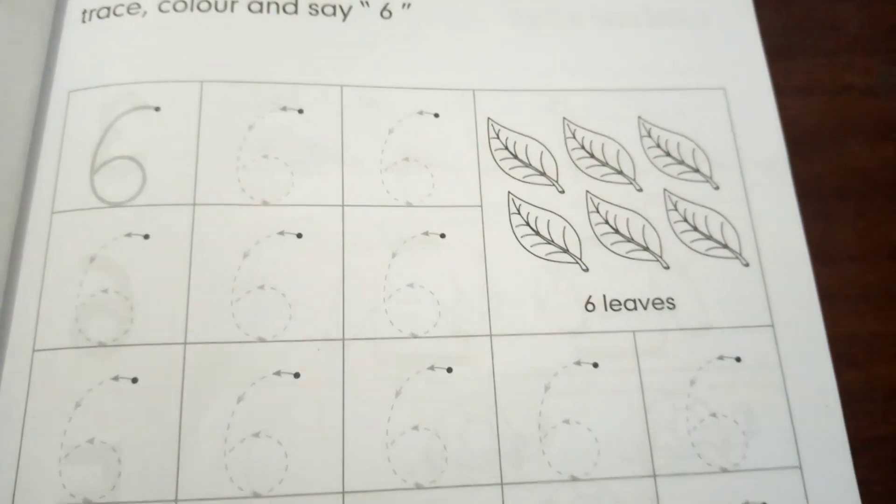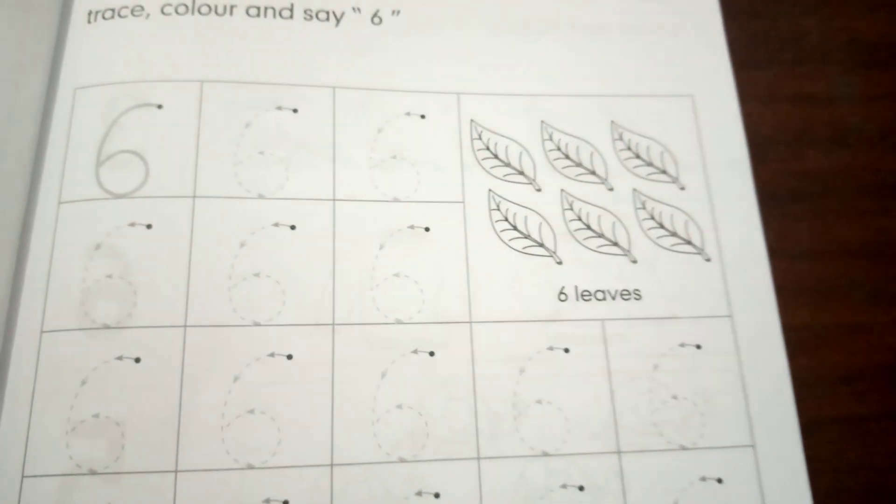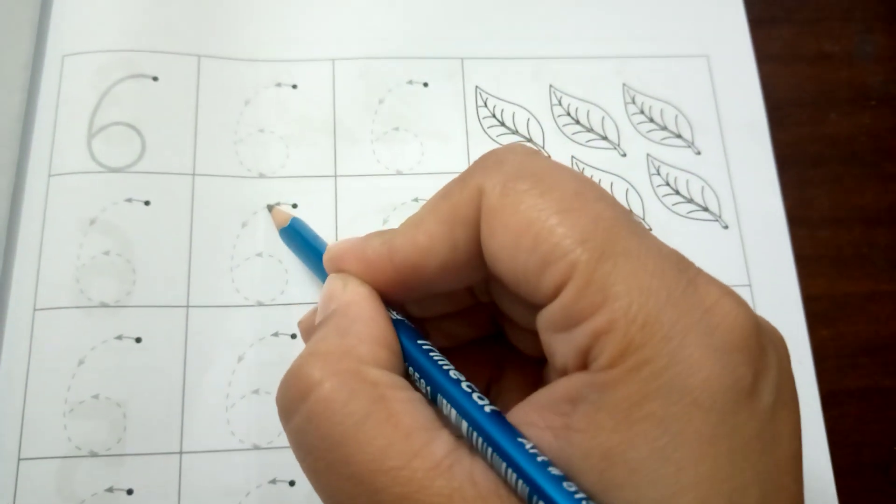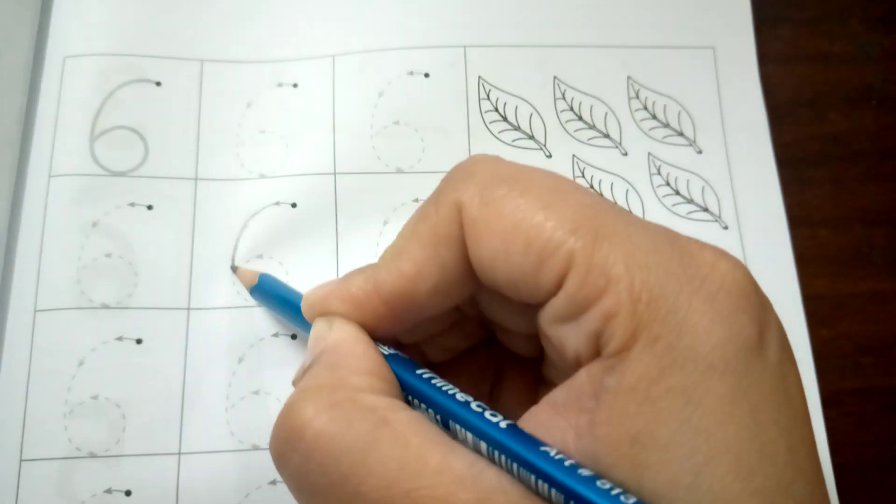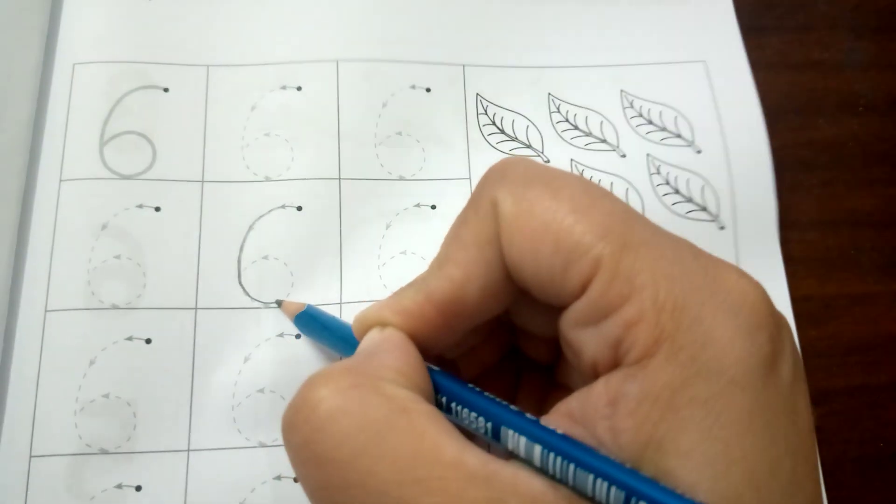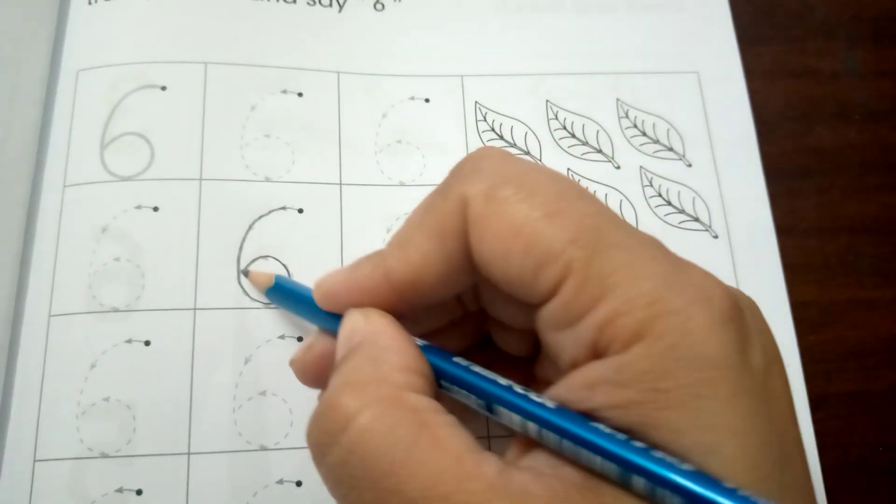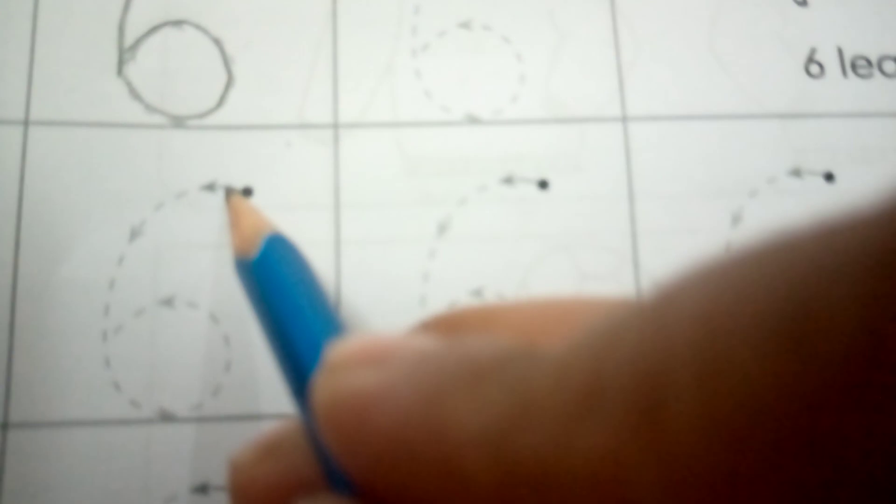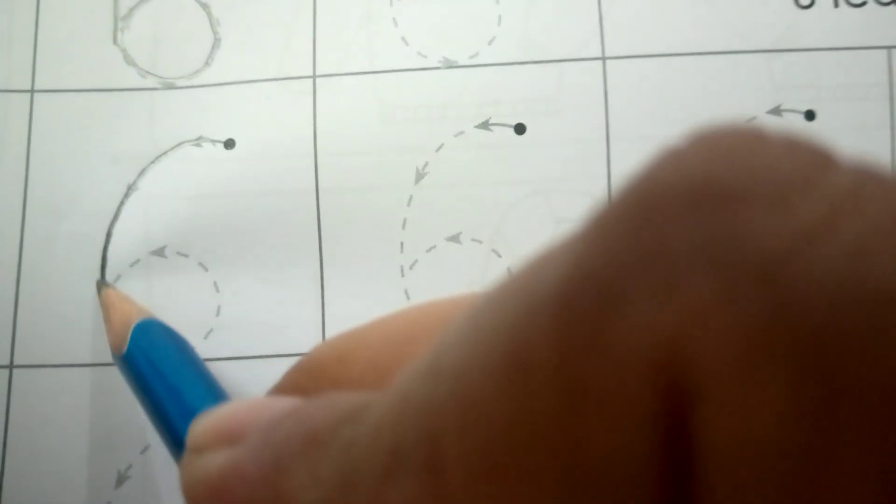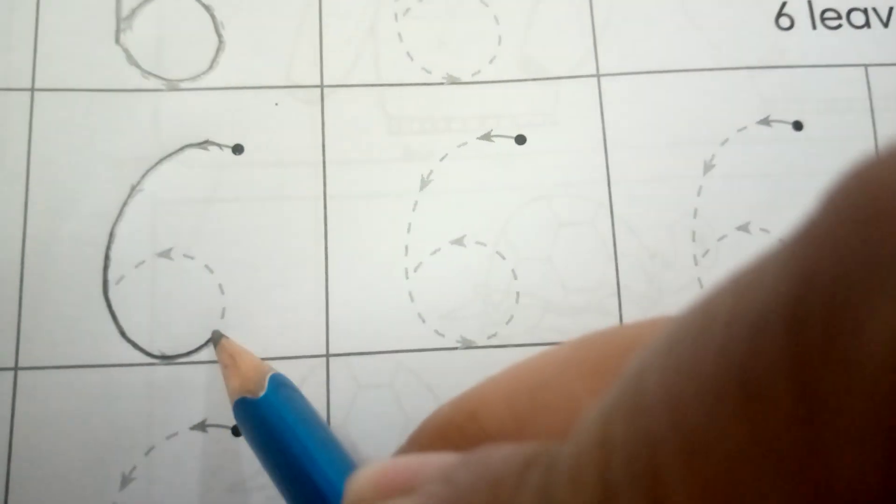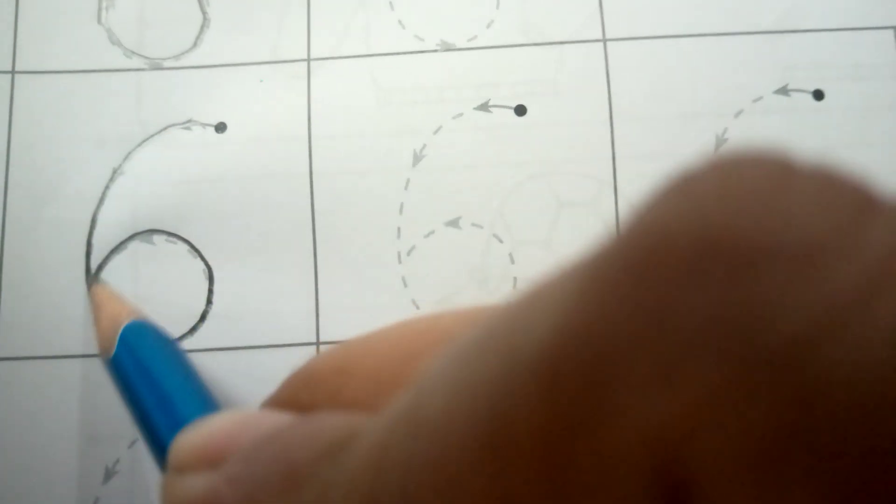Now page number eleven - number six. Trace, color and say number six. This is number six, trace it on the dots like this. Number six, number six. Again look at this number six.